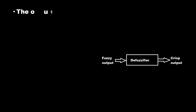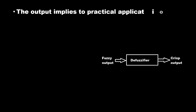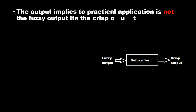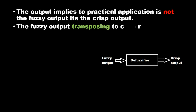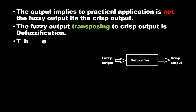Defuzzification. The output for practical application is not the fuzzy output — it's the crisp output. The process of transposing fuzzy output to crisp output is defuzzification. There are many defuzzification methods.